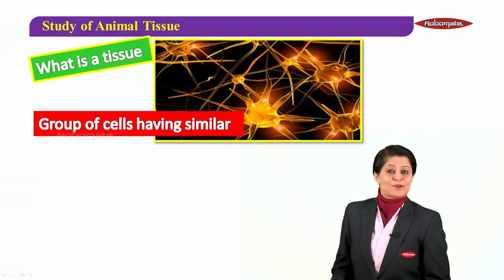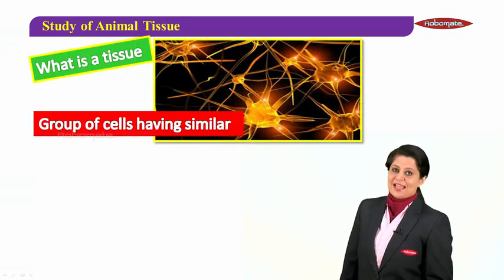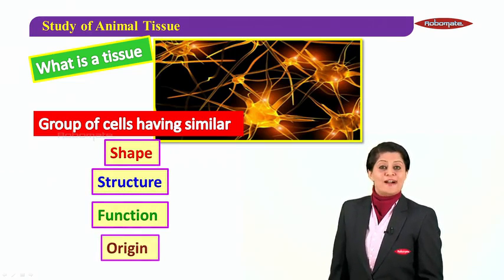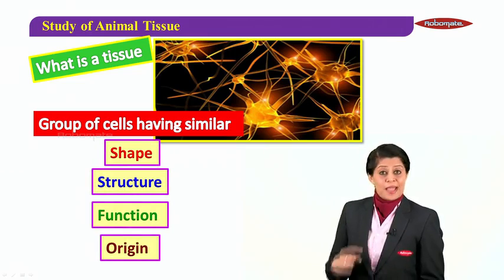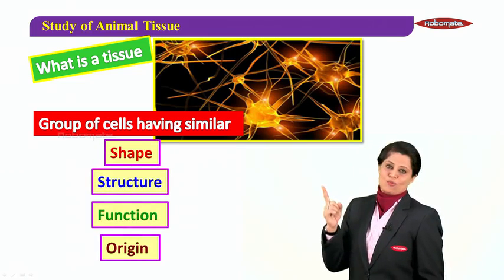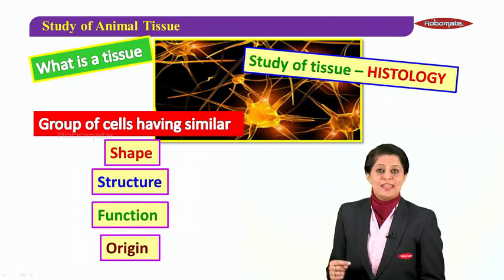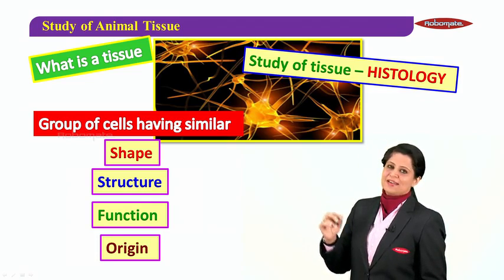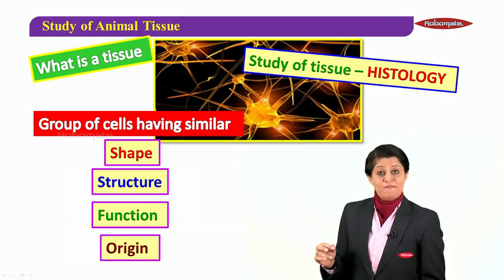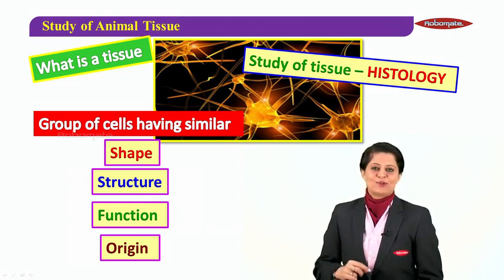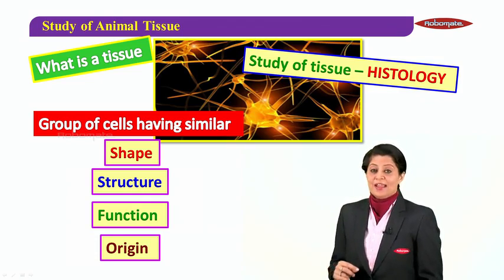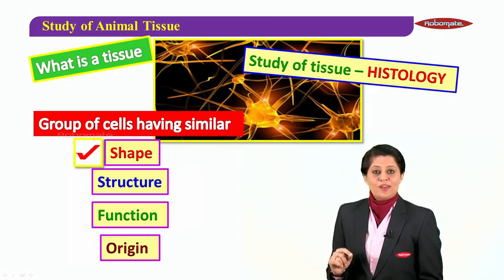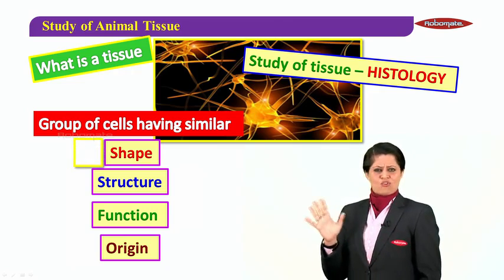So, a tissue is a group of cells having similar shape, similar structure, function, and origin. When we study tissue, we are studying histology. If we are studying the tissue of any organ, we say we are doing the histology of that organ.